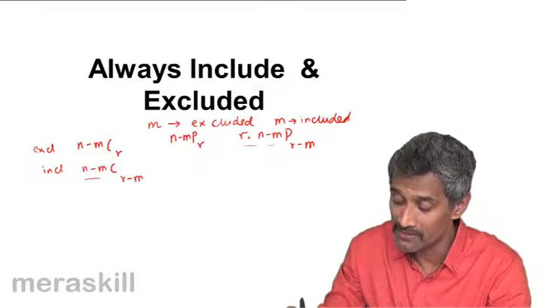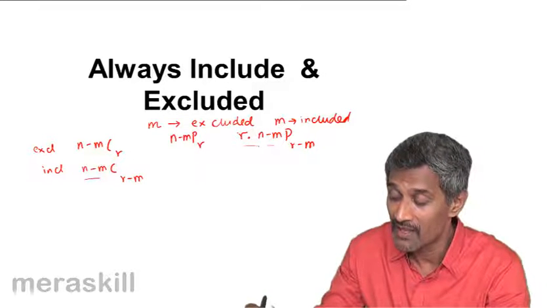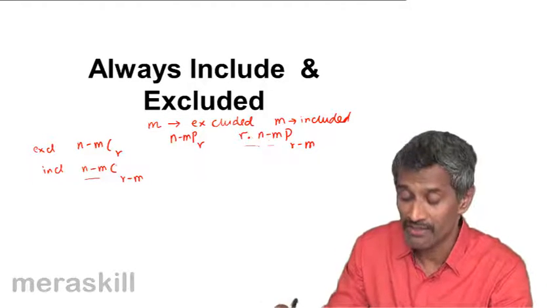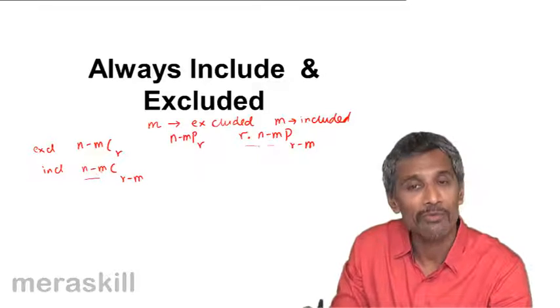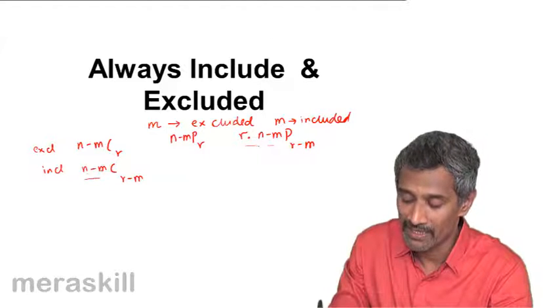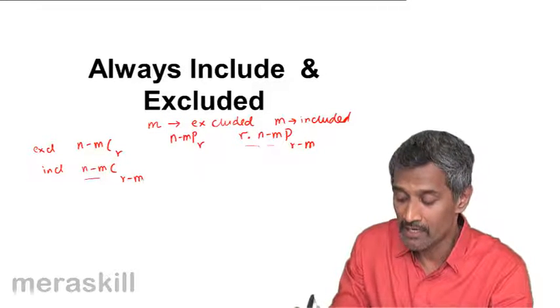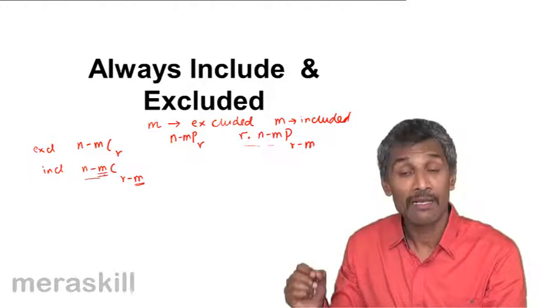This example beautifully differentiates between permutation and combination because here there is R ways of arranging. Here the arrangement is not important because all the various arrangements turn out to be one single selection. Hence, here it is going to be N minus M C_(R minus M) ways in which M of them are always included.